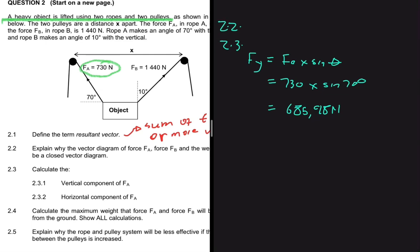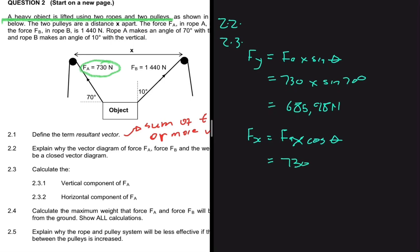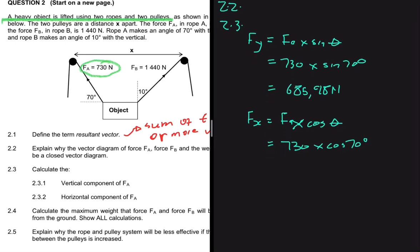Question 2.3.2 asks us to find the horizontal component of FA. When we found the vertical component we used FA multiplied by sine of theta. To find the horizontal component, we use FA multiplied by cos of theta. So FX, the horizontal component, equals FA multiplied by cos of theta. FA is 730, multiplied by cos of 70 degrees, which gives 249.67 newtons.